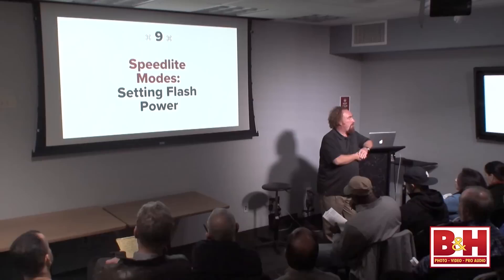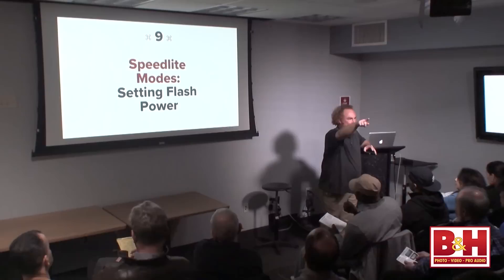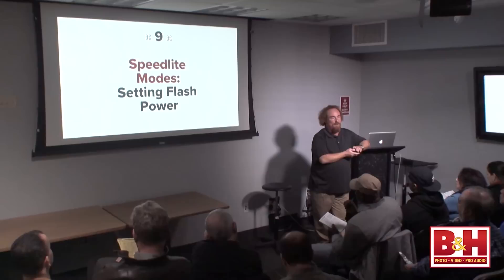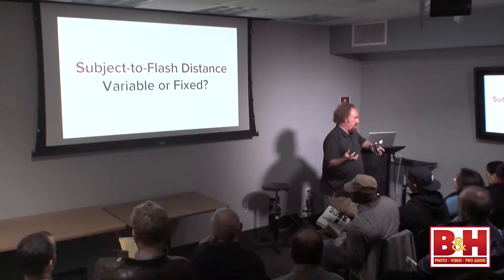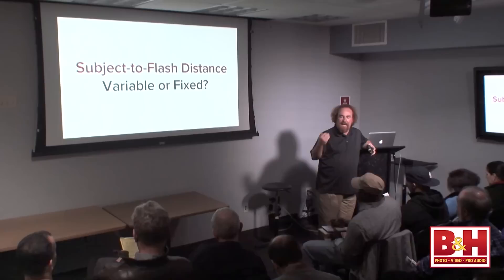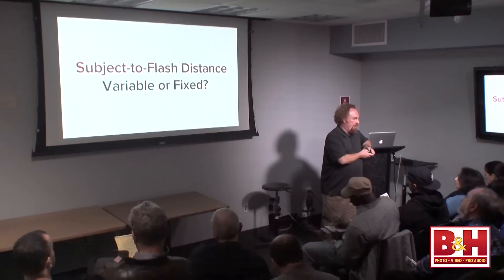Speed light modes. Here's how I want you to think about it: think about the distance between the flash and the subject. If that distance is fixed, you're going to use one type of mode. If the distance between the flash and the subject continues to change, you're going to use another mode. That's how I think about which flash mode to use — is the distance between the flash and the subject fixed or variable? Notice I said the flash-to-subject distance, not the camera-to-subject distance, since we're talking about off-camera flash.